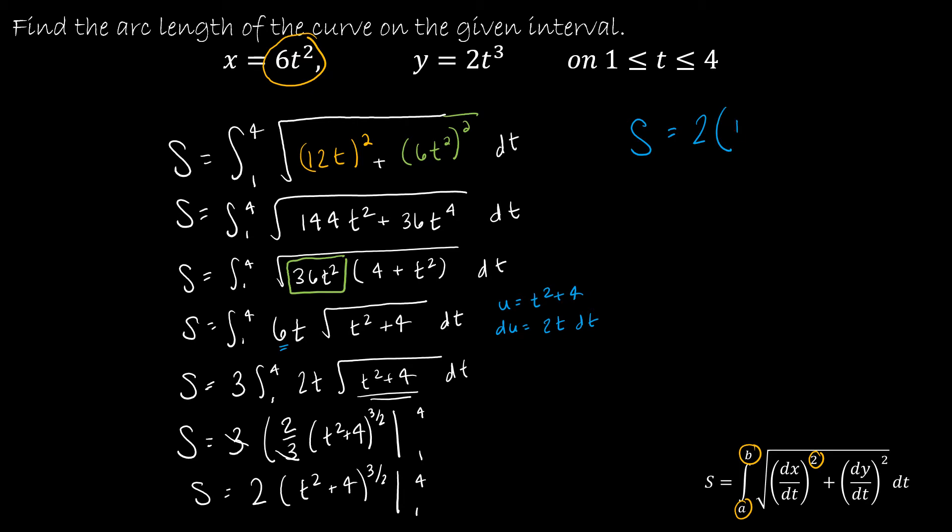4² is 16 plus 4 to the 3/2. And I'll just leave the 2 on the outside. So minus 1² plus 4 to the 3/2.